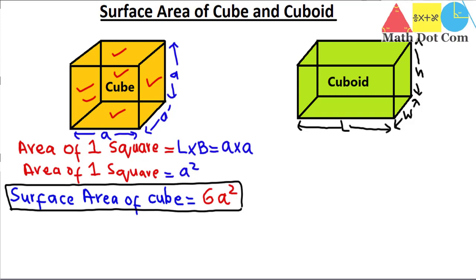The top and bottom faces are of the same measurement, the front and rear faces are of the same measurement, and the two side faces are of the same measurement. So out of these six faces we find the area of three faces and then multiply by two.